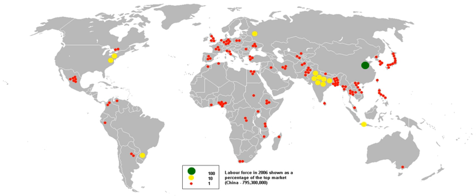India also has numerous rigid regulations such as maximum number of employees per company in certain sectors of economy, and limitations on employers on retrenchment and layoffs, requirement of paperwork, bureaucratic process and government approval for change in labour in companies even if these are because of economic conditions. Indian labour laws are considered to be very highly regulated and rigid as compared to those of other countries in the world. The intensity of these laws have been criticised as the cause of low employment growth, large unorganised sectors, underground economy and low per capita income.